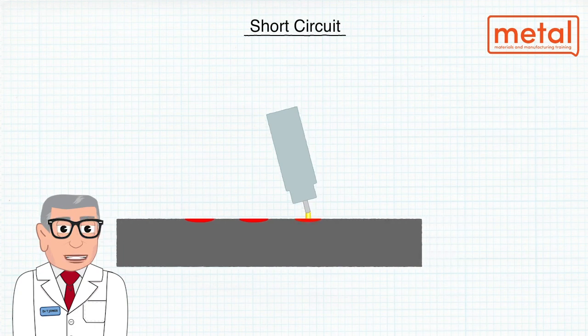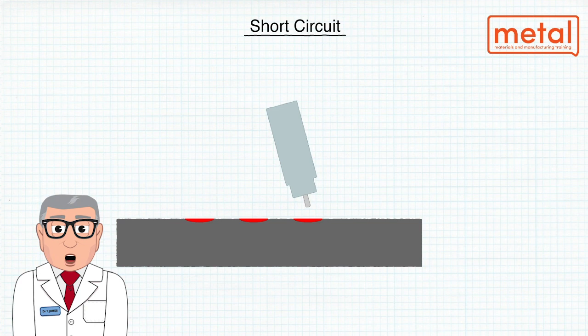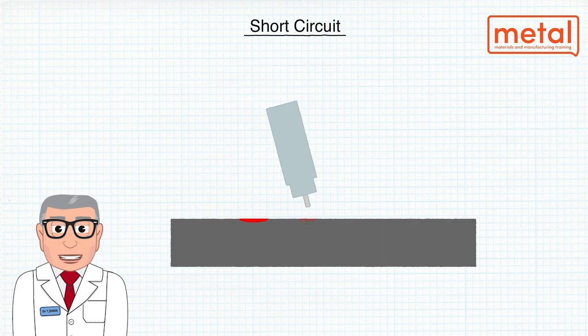There is a certain amount of weld spatter involved with short circuit transfer. However, the weld pool is relatively small compared to the other transfer modes and is more easily controlled.